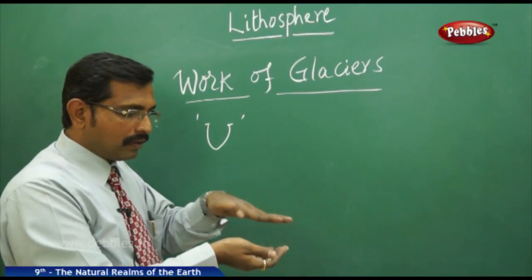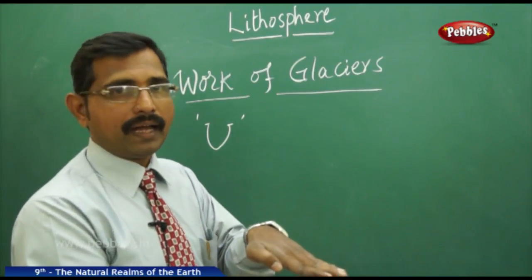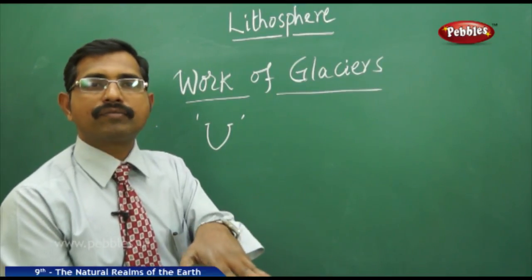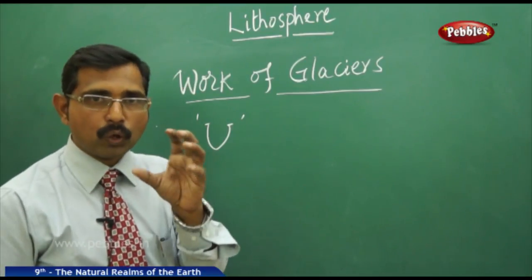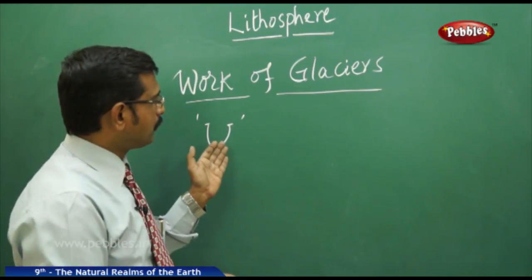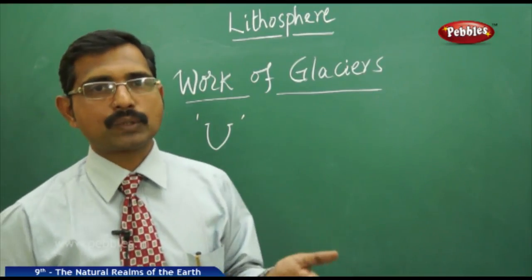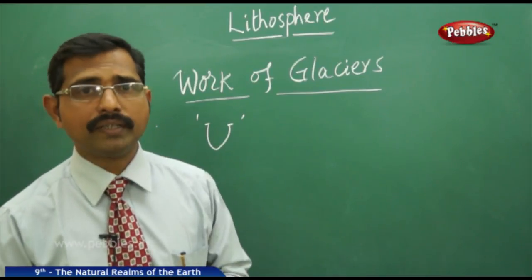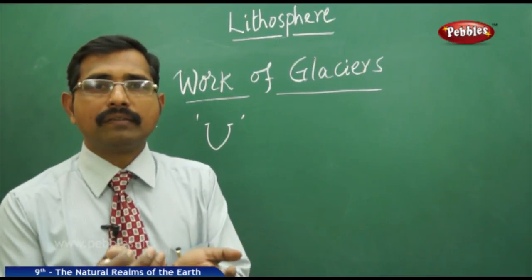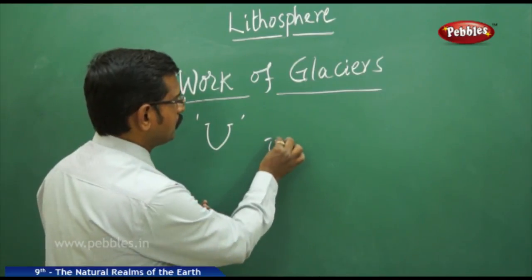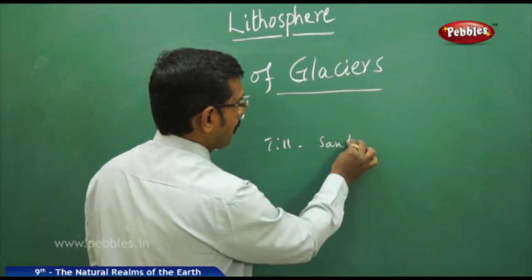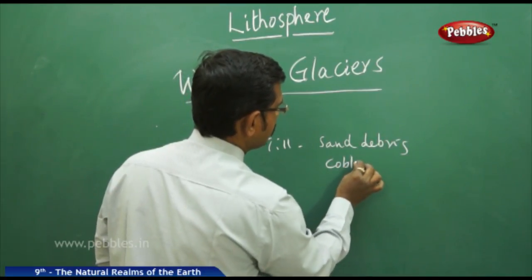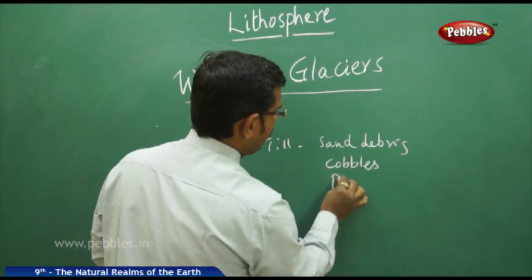During the course of movement, glaciers weather the bedrock, forming sand particles, pebbles, and cobbles. Sometimes when the glacier reaches an area where it can no longer carry this material, huge rugged boulders are deposited, forming what are called tills. Tills are nothing but sand, debris, cobbles, and pebbles.